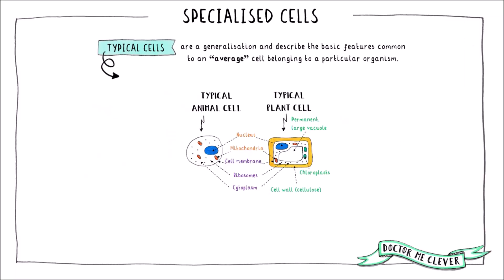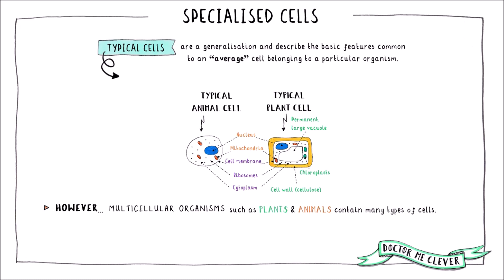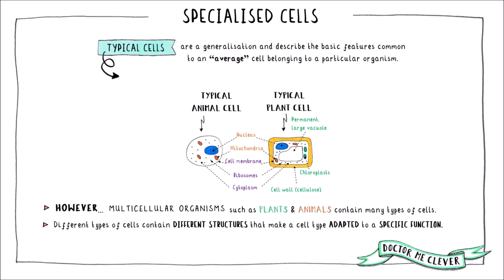The typical cells described in the previous two videos are a generalisation and describe only the basic structures found in an average animal, plant or bacterial cell. However, multicellular organisms contain many different cell types that have these basic structures such as a cytoplasm, nucleus or a cell membrane, but also have additional structures that allow them to carry out a particular function.